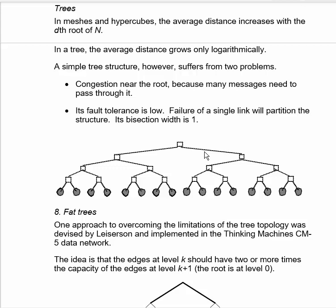And consequently, its fault tolerance is low. If one of these links fails, the tree is partitioned into two. So it has a bisection bandwidth of only one.